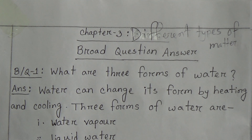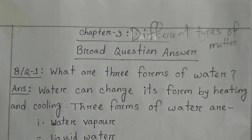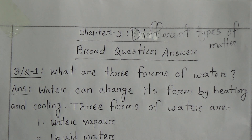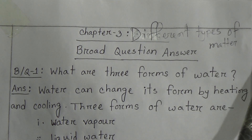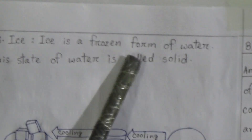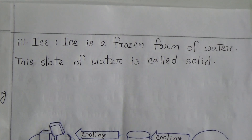Number one: water vapor. Water vapor is an invisible form of water; it is the gaseous state of water. Number two: liquid water. Liquid water is the form of water we use for drinking, washing, swimming, etc. Number three: ice. Ice is a frozen form of water; this state of water is called solid.